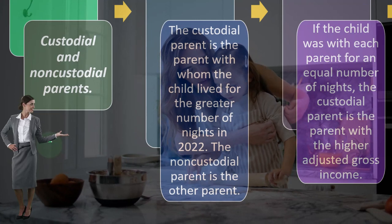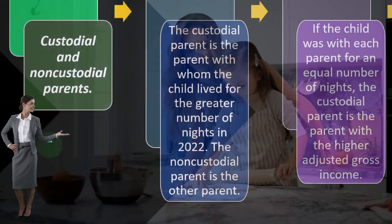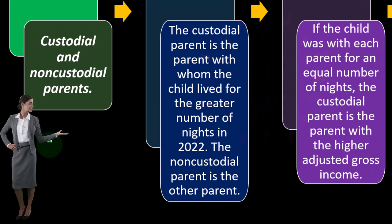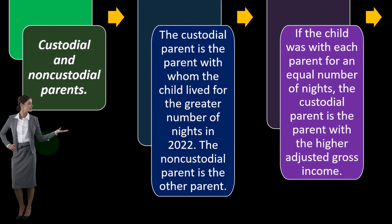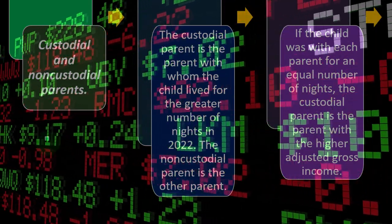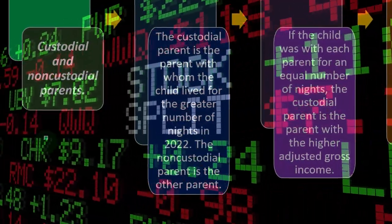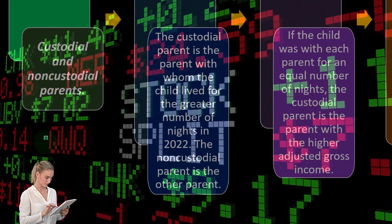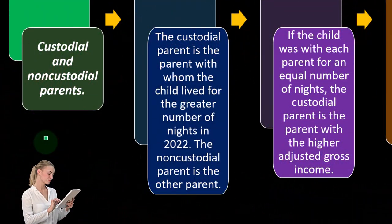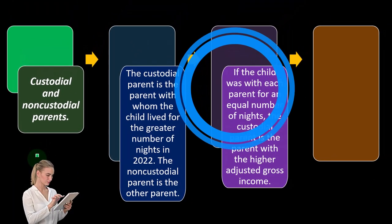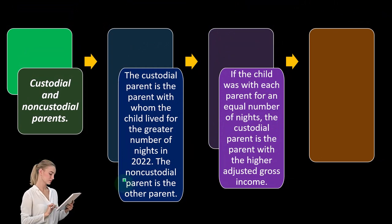So you can see how this gets messy. If the child was with each parent for an equal number of nights, the custodial parent is the parent with the higher adjusted gross income. Some people bulk at this, but if you split it evenly — as is often the case with joint custody — the custodial parent defaults to the one with the higher AGI. The assumption is that the person with higher adjusted gross income is probably meeting more of the child's support needs.